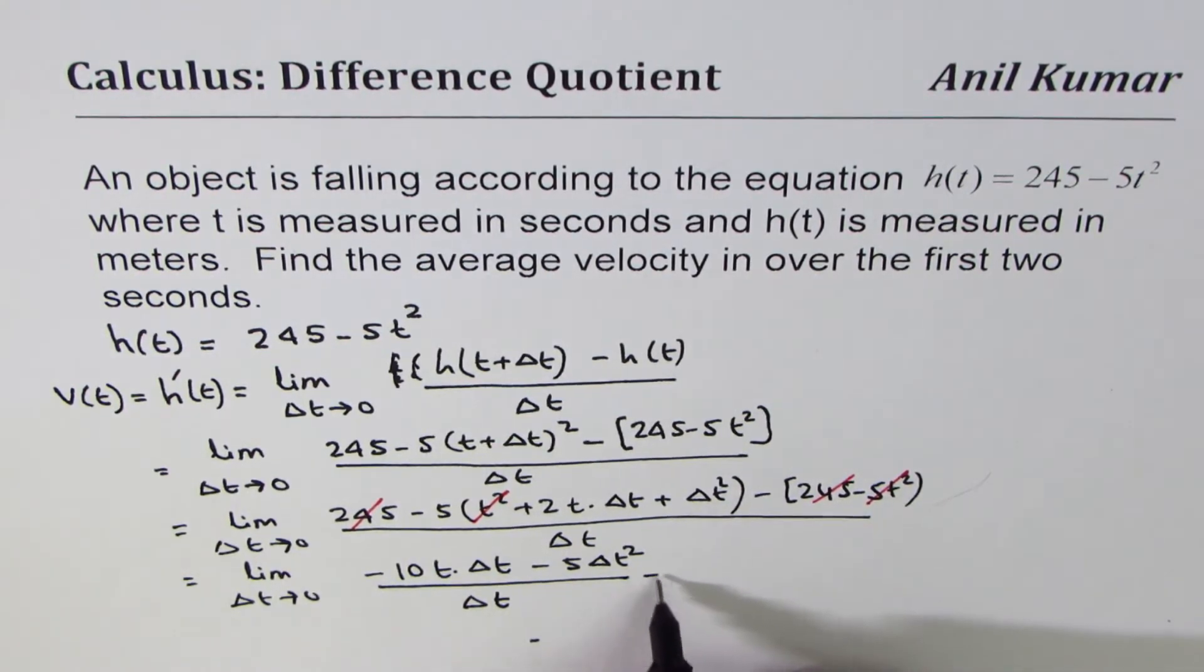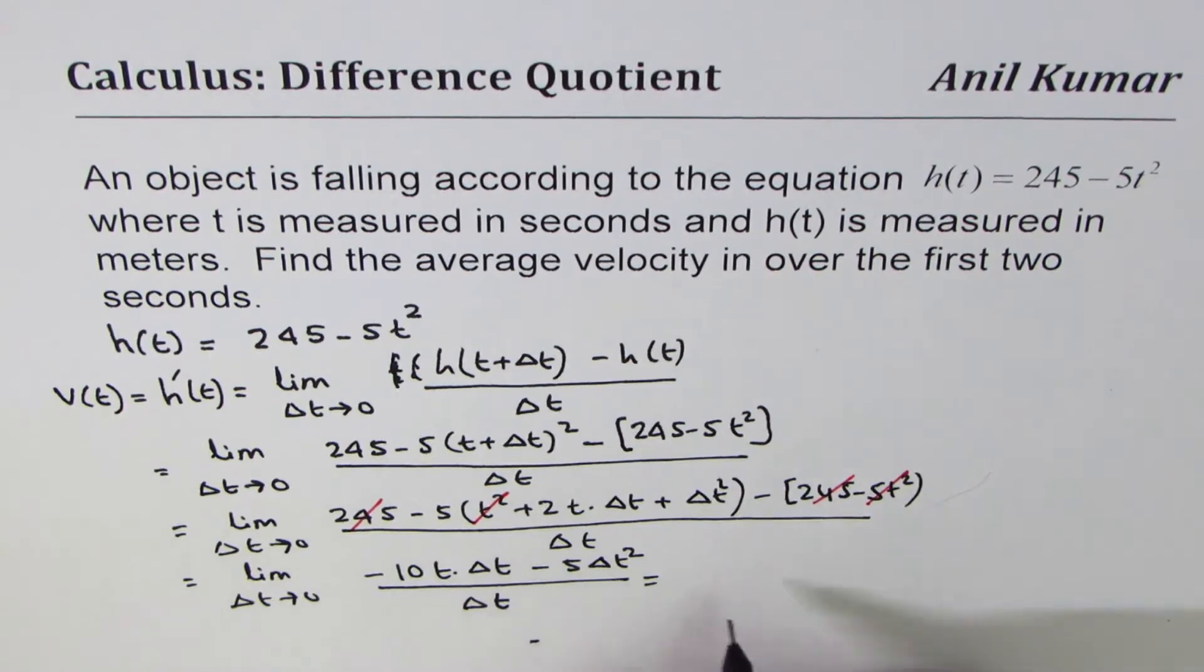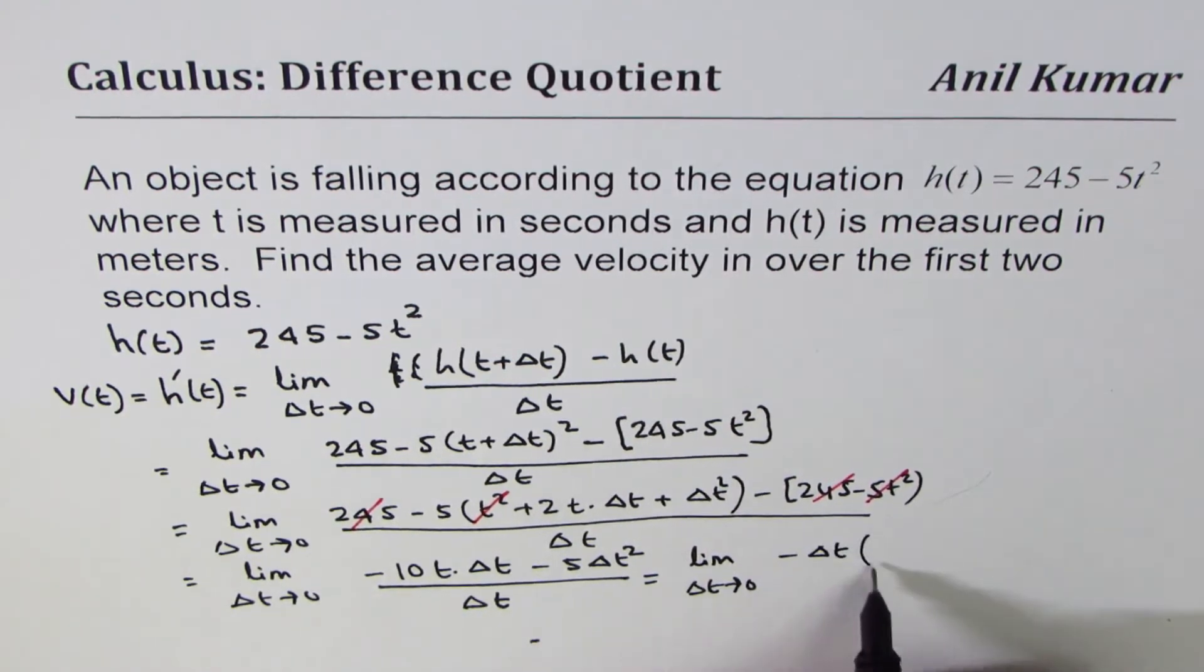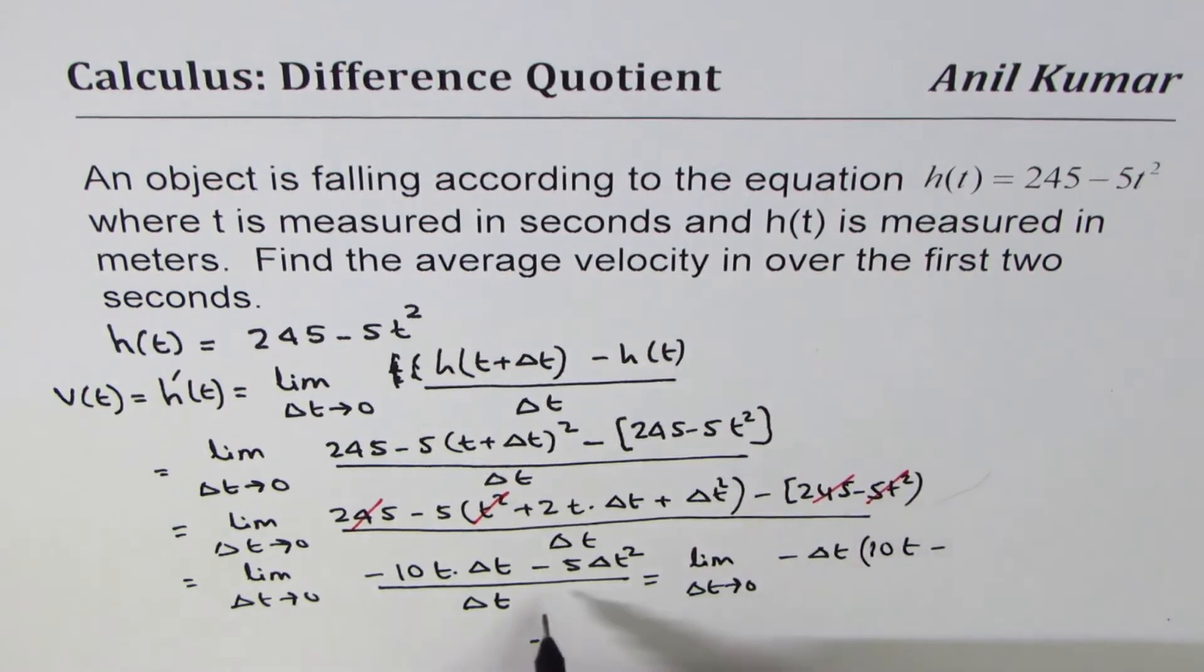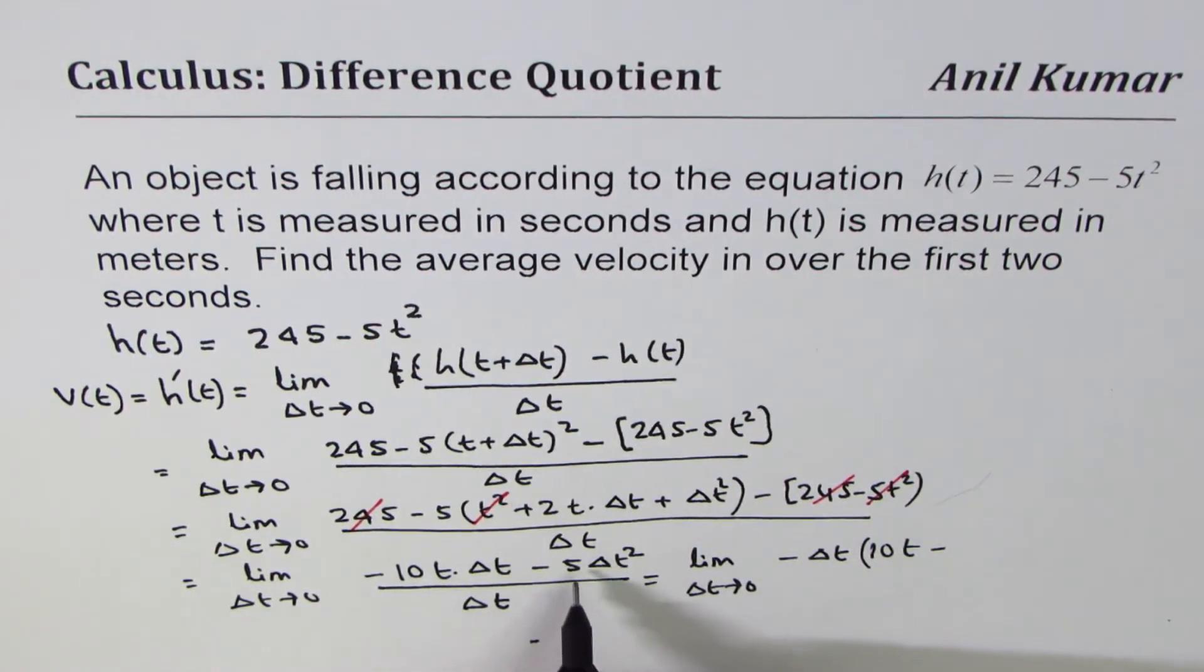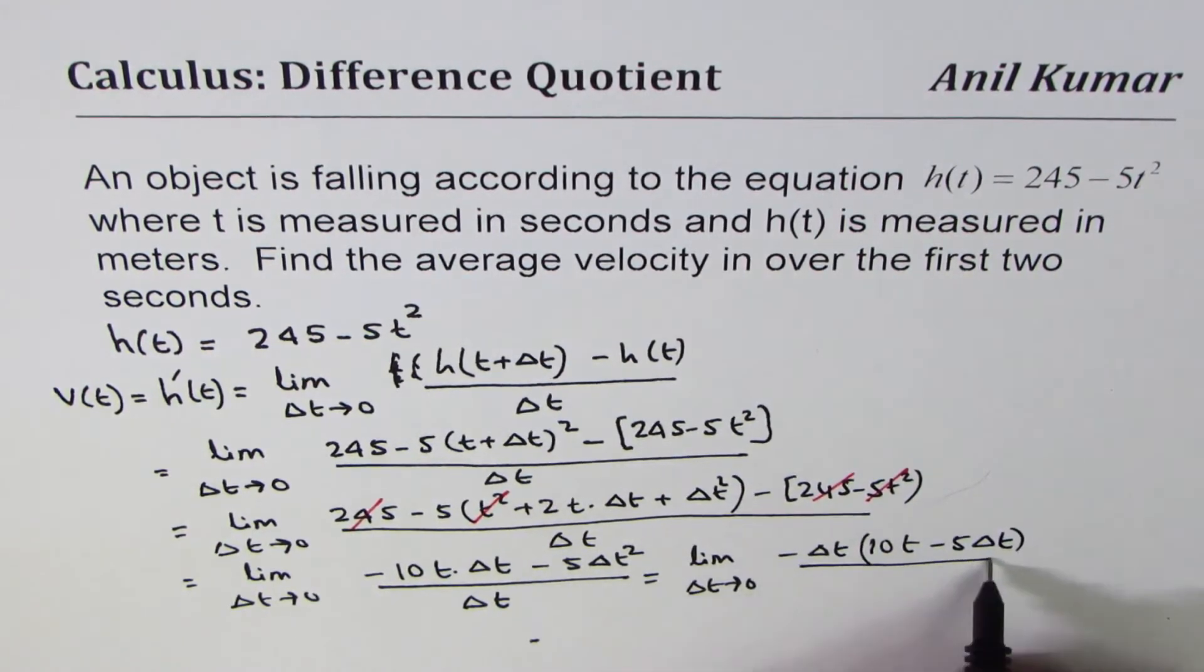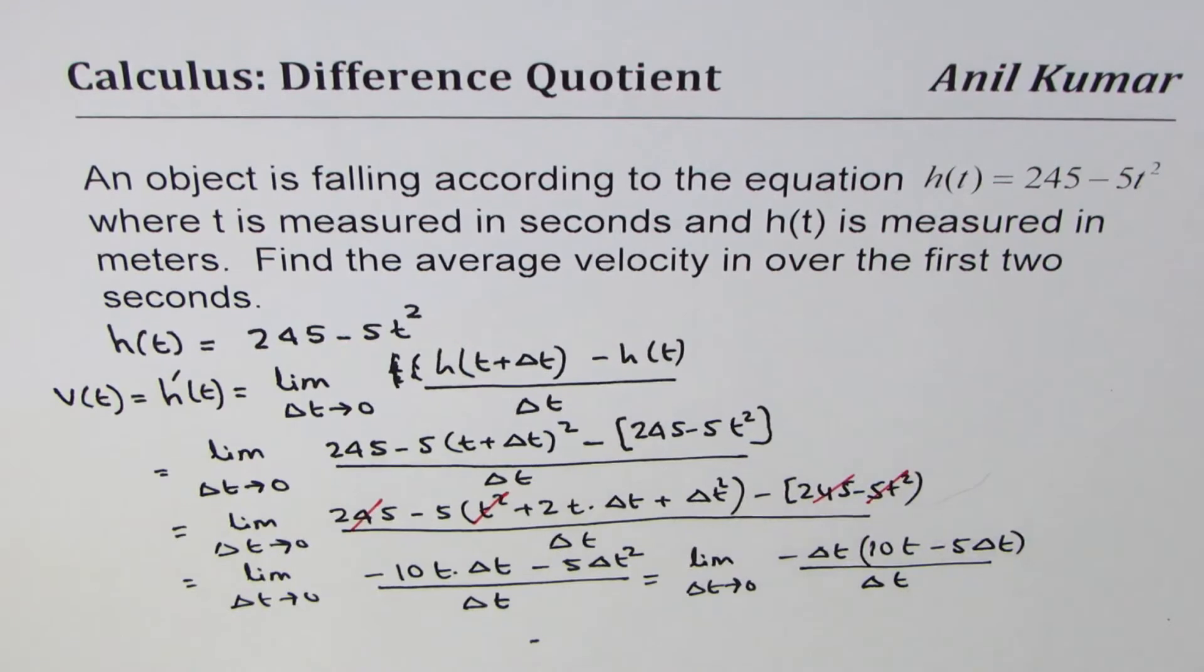Now, which is equal to, now Δt can be taken common, so we get limit Δt approaches 0. So let's take -Δt common. So we are left with 10t - 5Δt, divided by Δt.